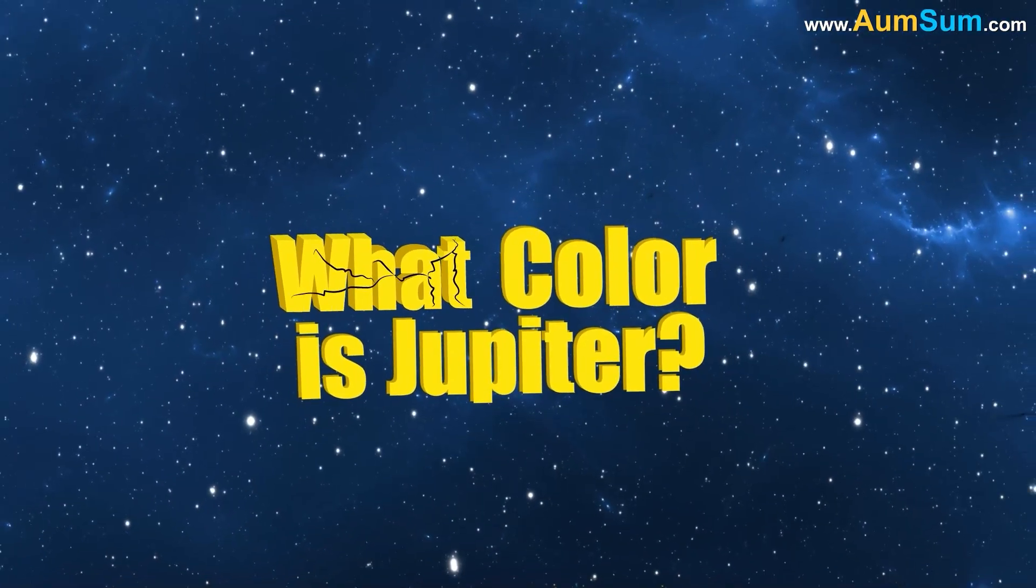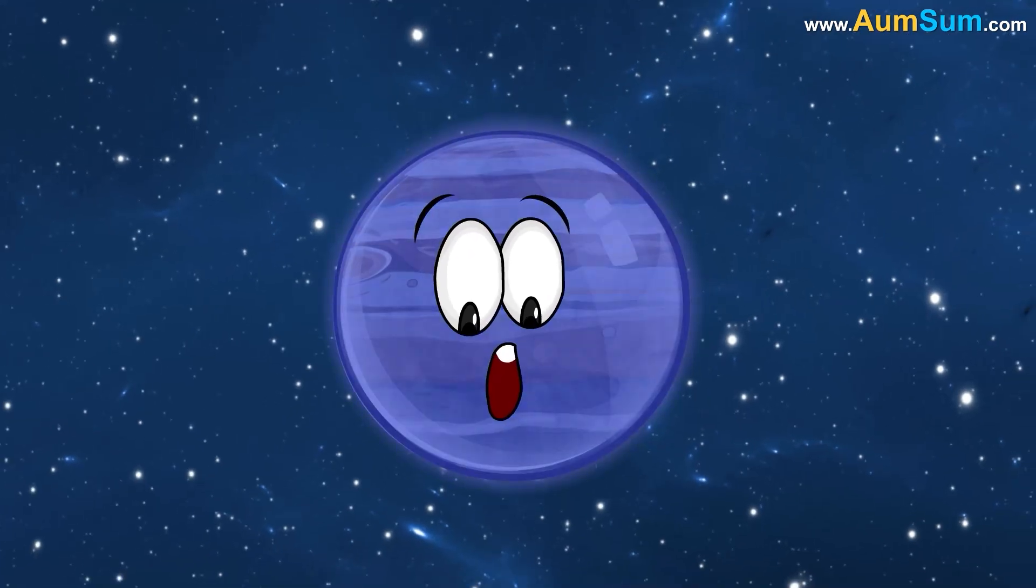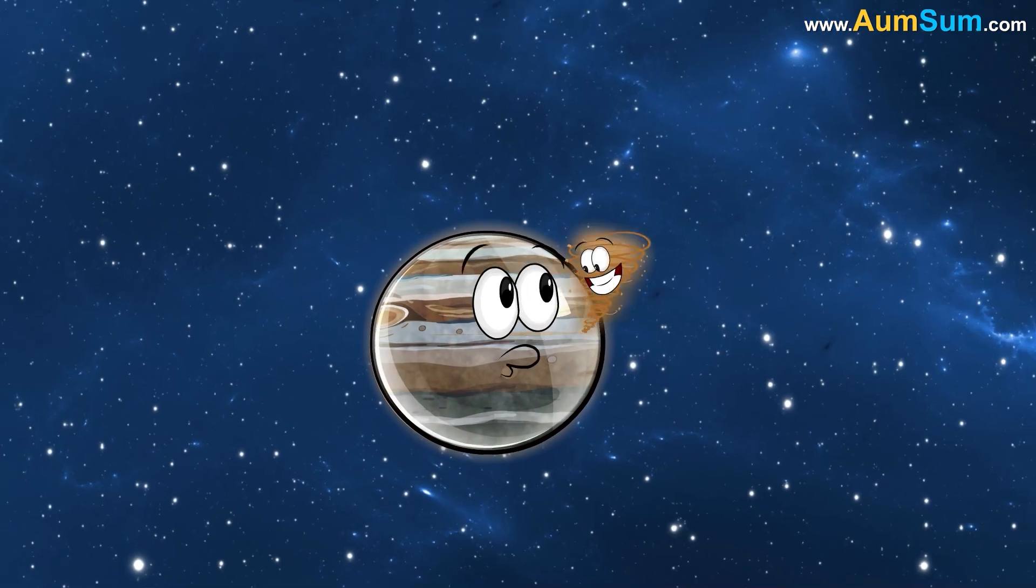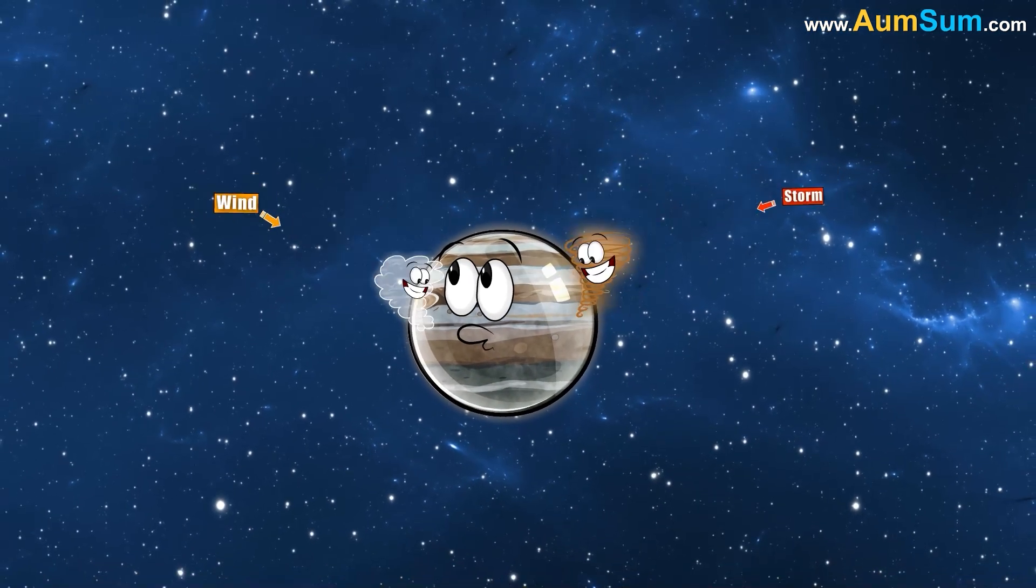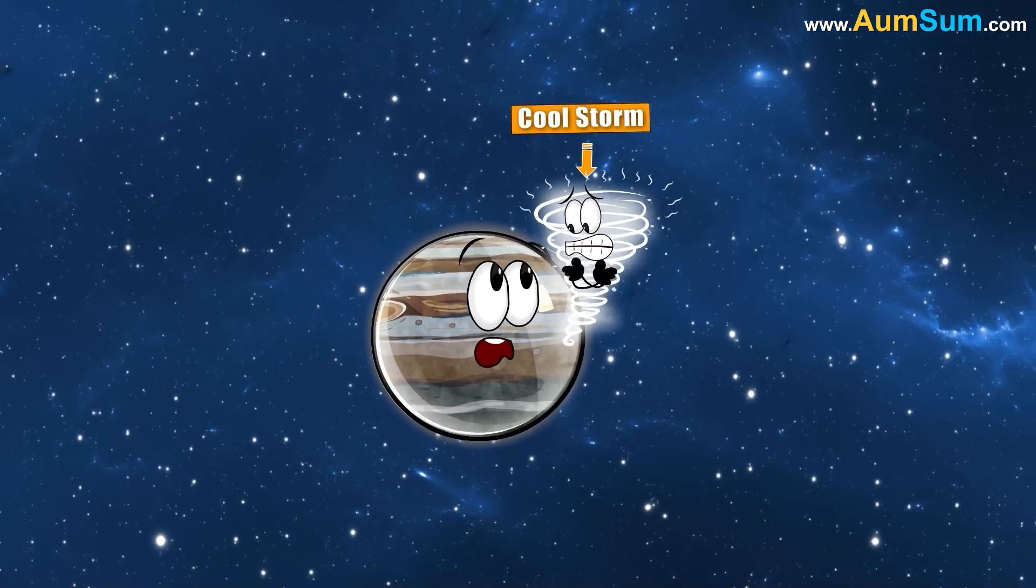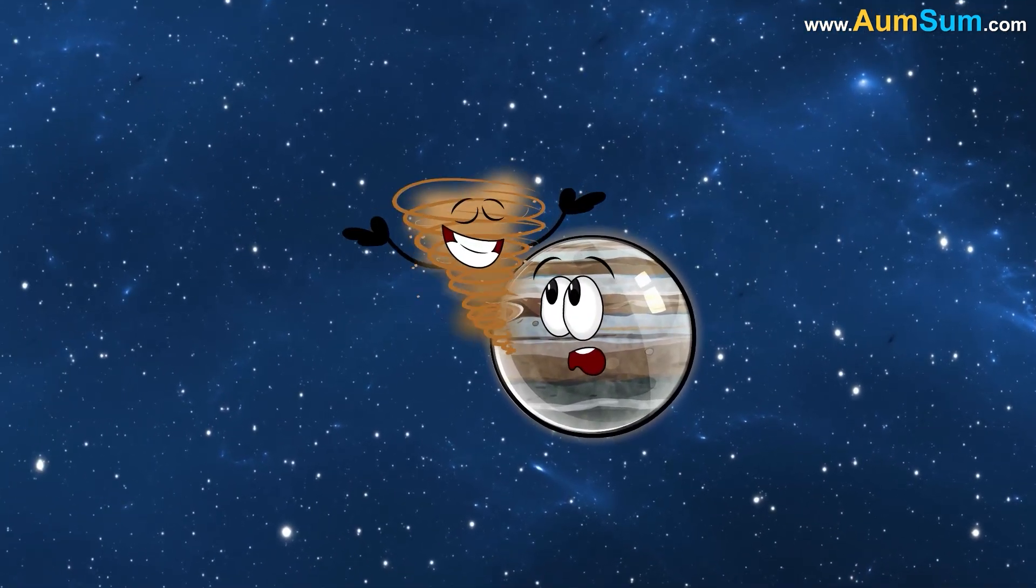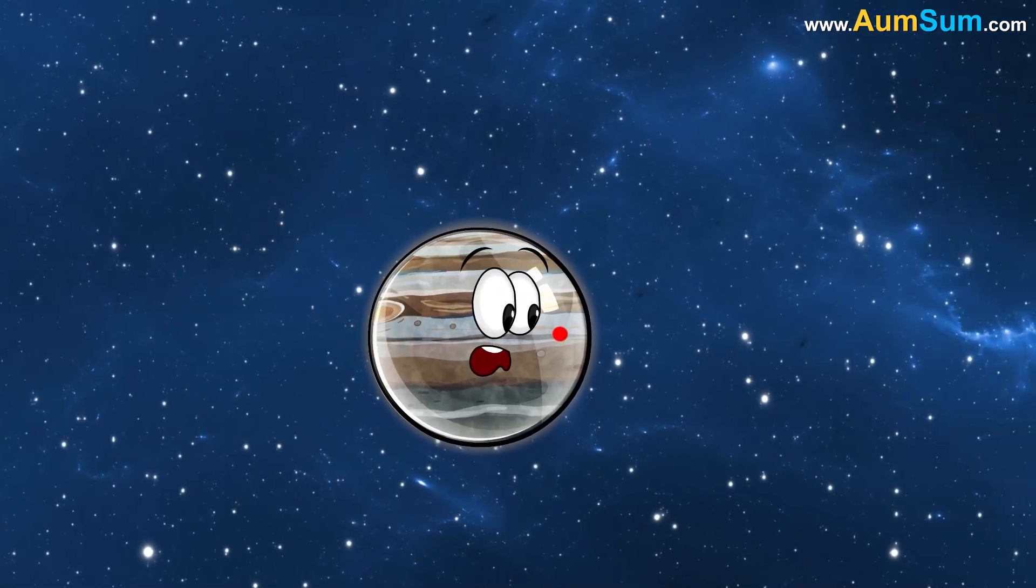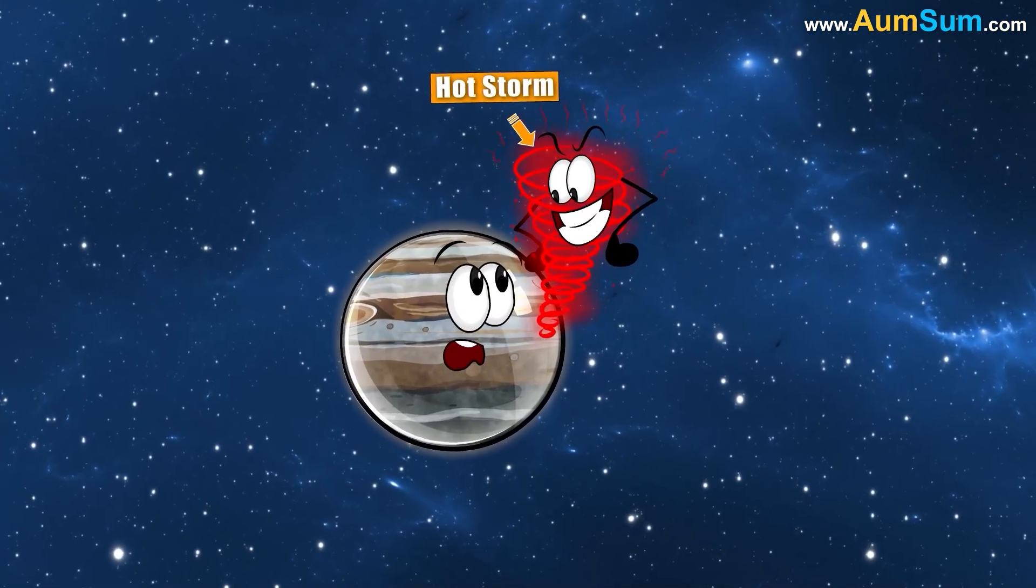What color is Jupiter? Firstly, the color of Jupiter changes with storms and wind in its atmosphere. White spots indicate cool storms, brown spots indicate warm storms, and red spots indicate hot storms.